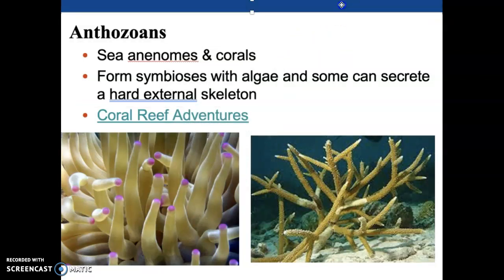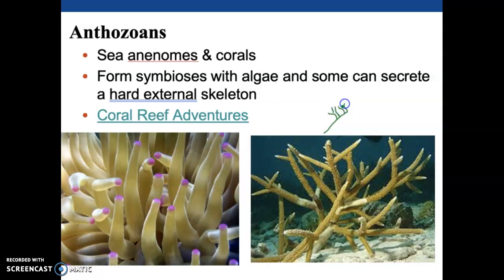A lot of these guys form a symbiosis with algae. Some of the corals can actually secrete a hard external skeleton. Corals come in a spectrum of varieties: soft corals, hard corals, stony corals. The picture on the right is of a hard coral called staghorn — think about deer antlers. Each of those little branches is actually hundreds of little animals. You have the branch, and on it there's a little coral with tentacles — a little polyp body attached to the branch.